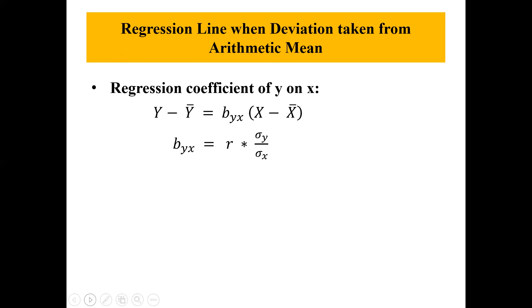Where b y x equals r, the correlation, multiplied by sigma y divided by sigma x, where sigma y is the standard deviation of variable y and sigma x is the standard deviation of variable x.